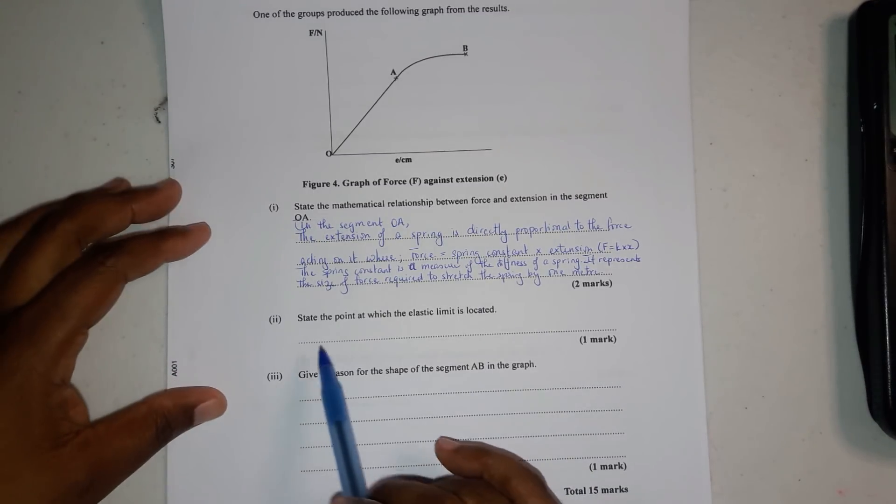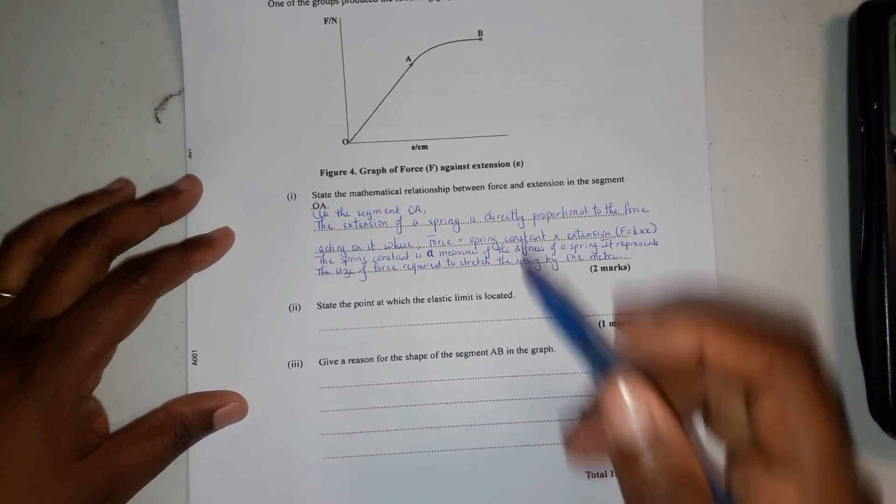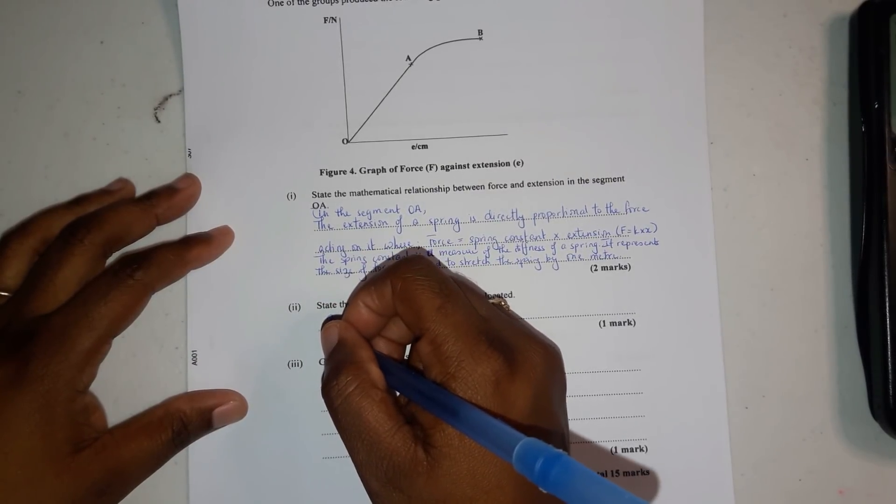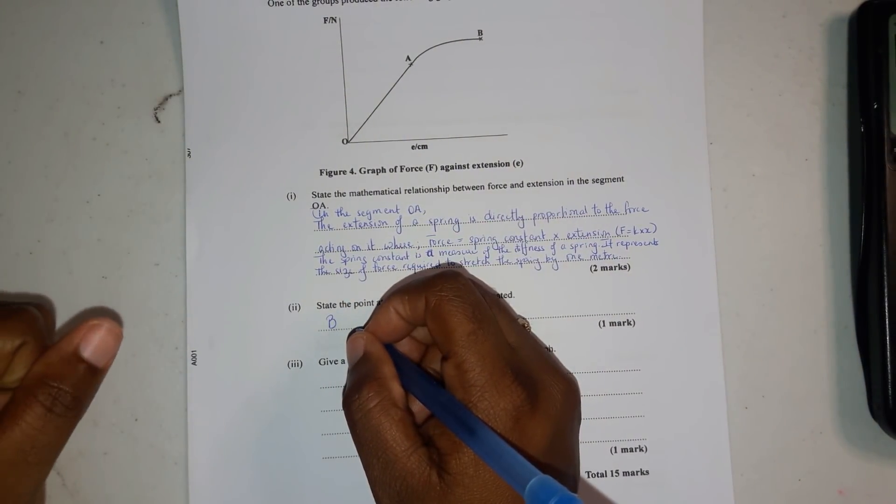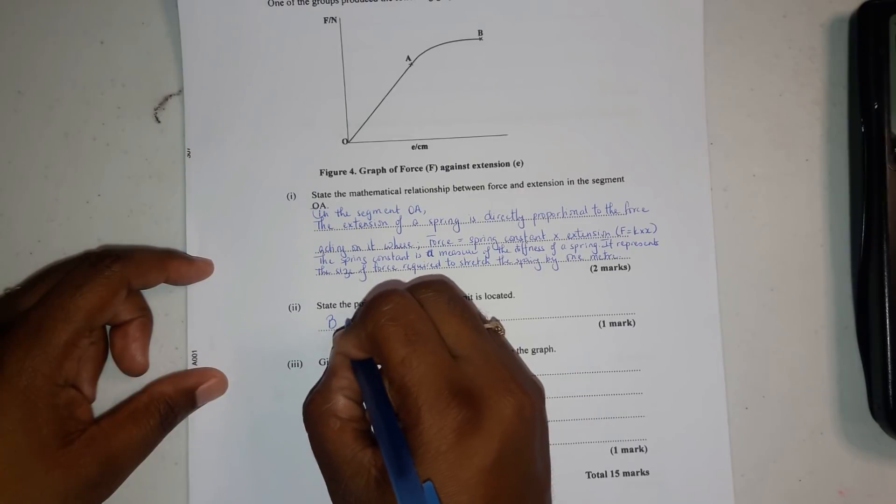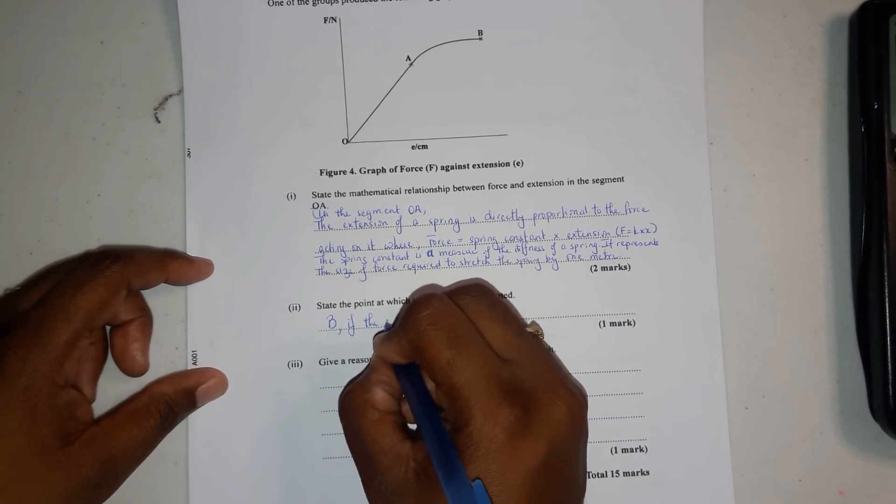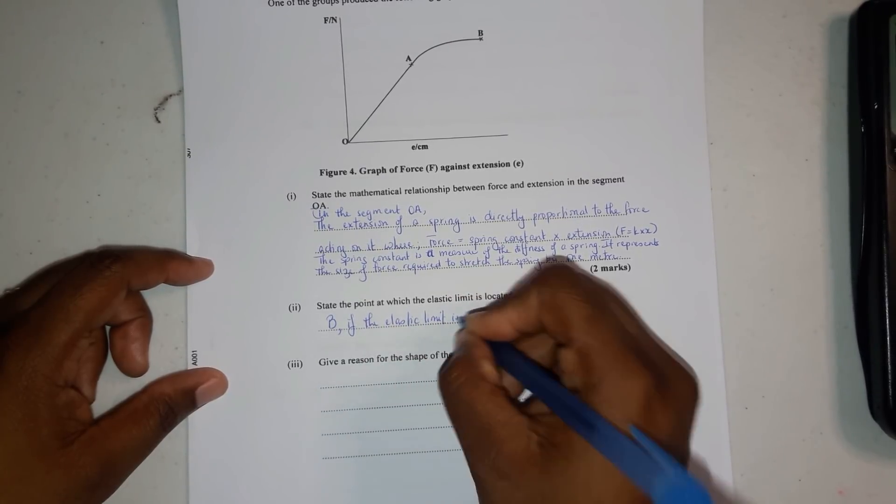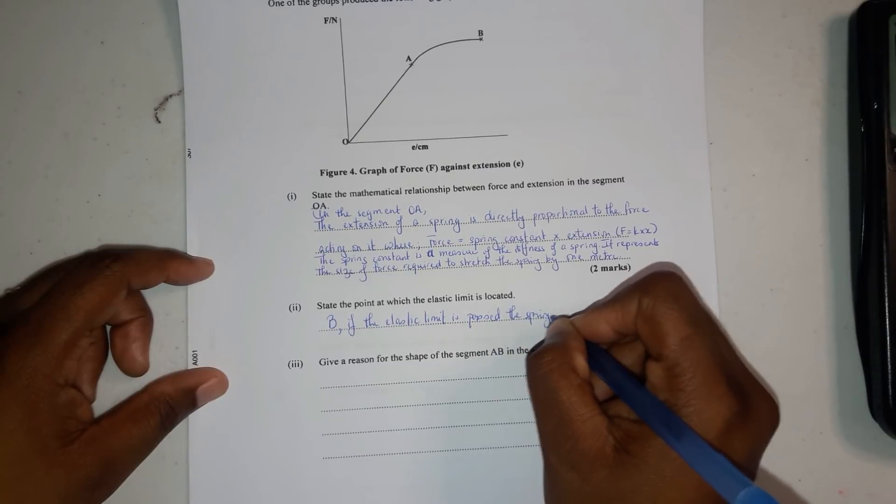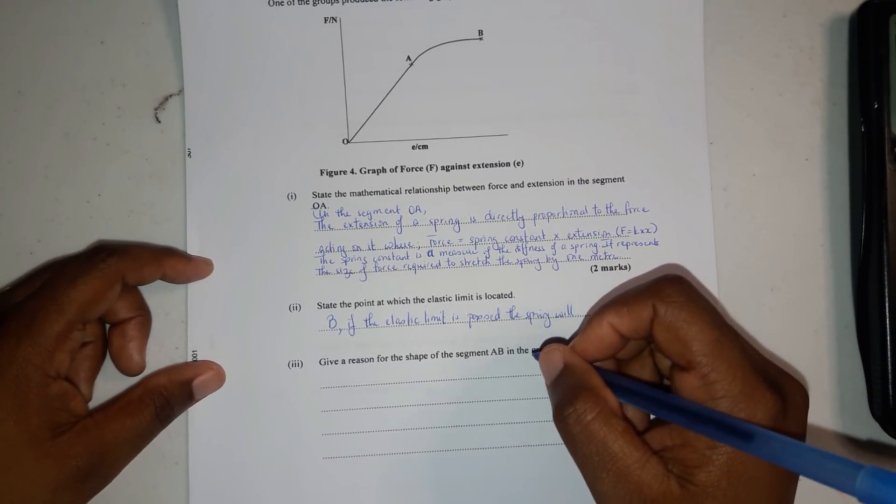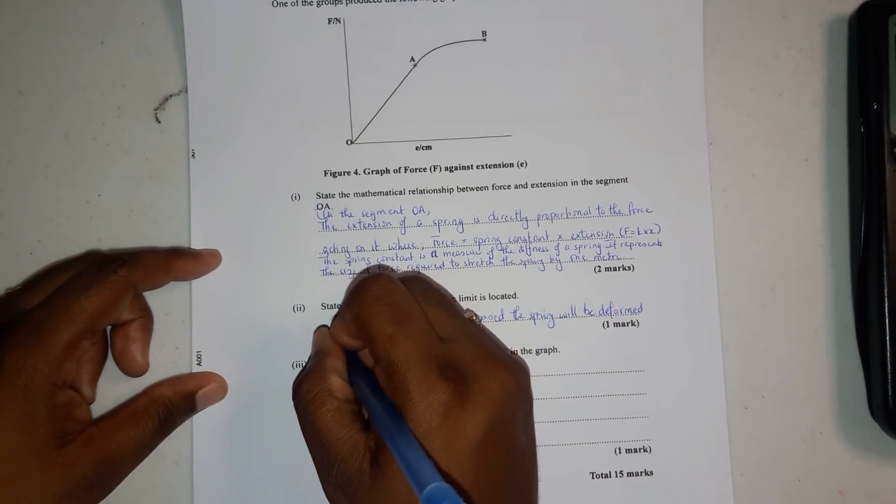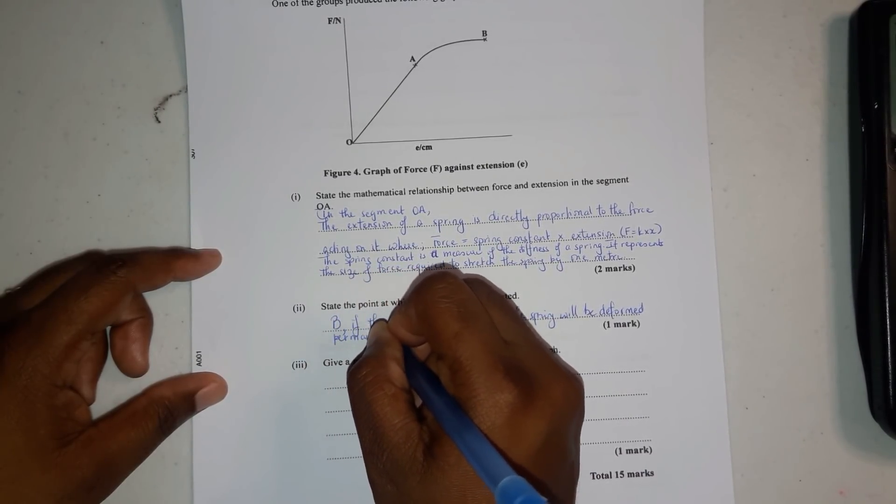State the point at which the elastic limit is located. The point at which the elastic limit is located is at B. If the elastic limit is passed, the spring will be deformed permanently.